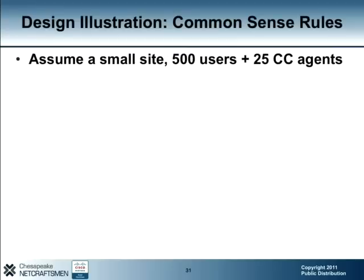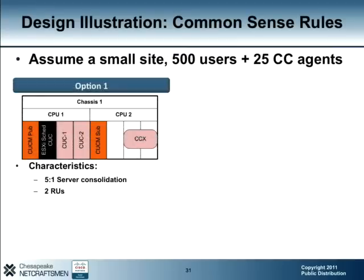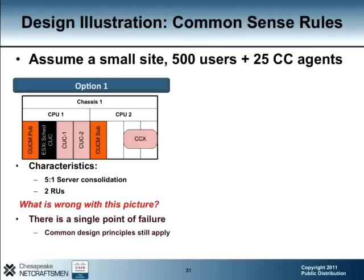Now let's wind down the presentation with some design examples. The first example is a small site with 500 users and 25 contact center agents. We want a CUCM cluster with at least two nodes, a Unity Connection cluster, and a Contact Center Express server. One option is to load all of these apps on a single UCS C-Series chassis. We have eight CPU cores, allocated as follows: one to each Unified Communications Manager node, one to each Unity Connection node, one for all Unity Connection VMs on the chassis for the ESXi scheduler, and two cores for Contact Center Express. Assuming we have the proper memory, there is plenty of capacity. We can also see benefits such as two RUs versus six or eight, and a net reduction of five servers to one. However, there is a single point of failure in the form of one lonely UCS platform.